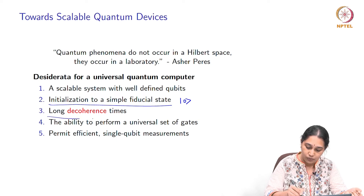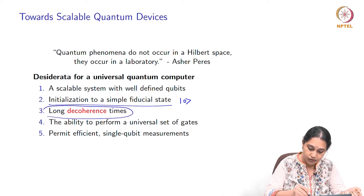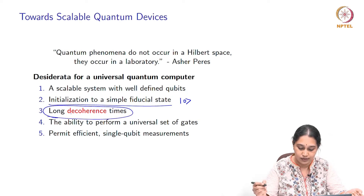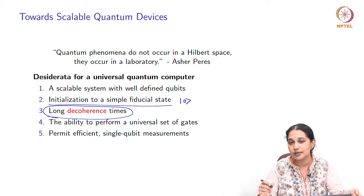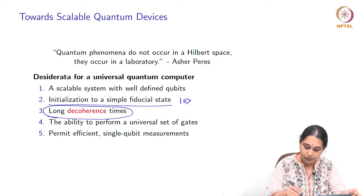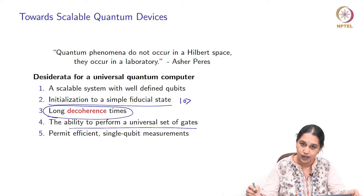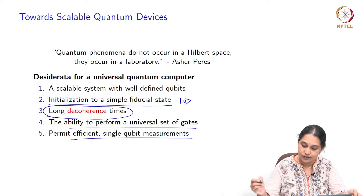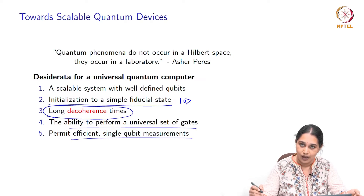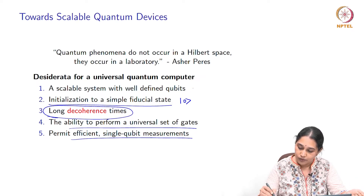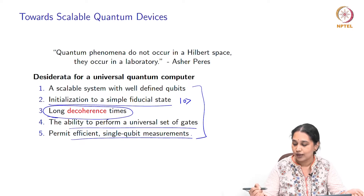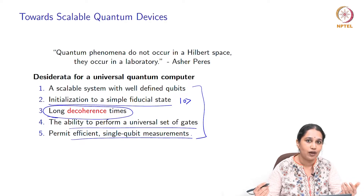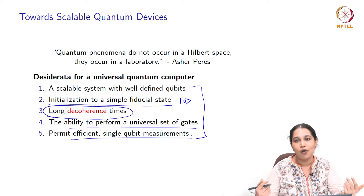Then we come to what will be the topic of this lecture: the key challenge of long decoherence times — and I will explain shortly what decoherence means. Of course, the ability to perform a universal set of gates, which we have already discussed, and the ability to perform efficient single qubit measurements. Many of these requirements are indeed fulfilled by some of the processors you have had access to on IBM Q.